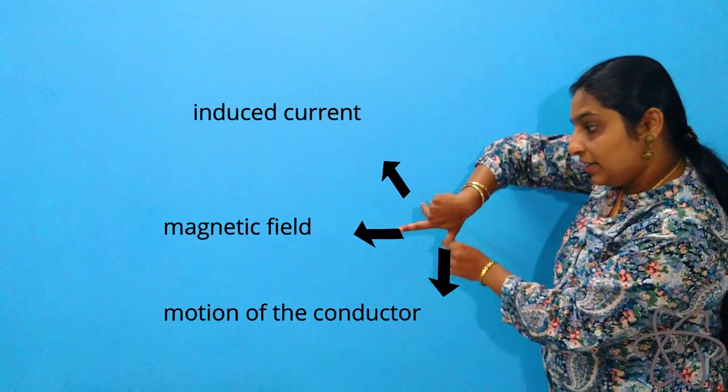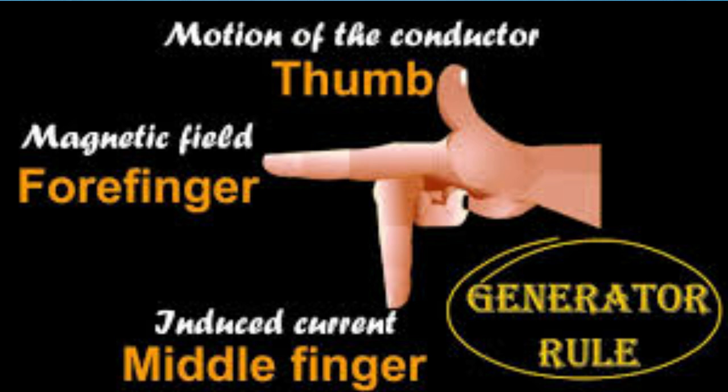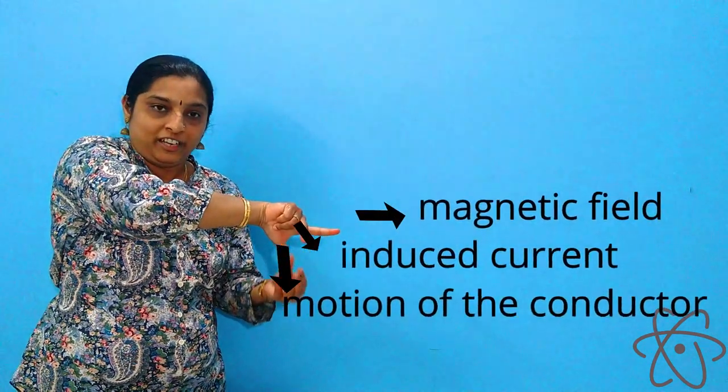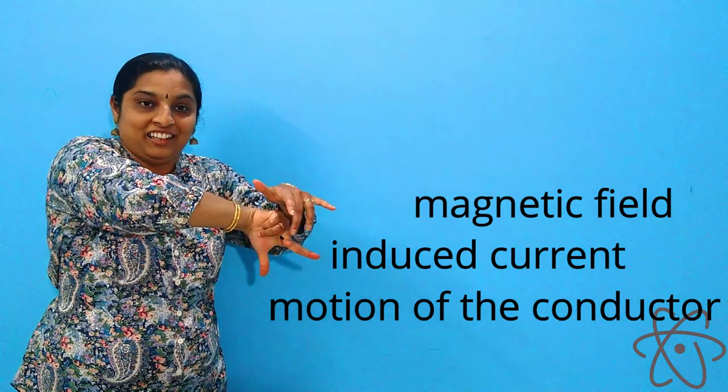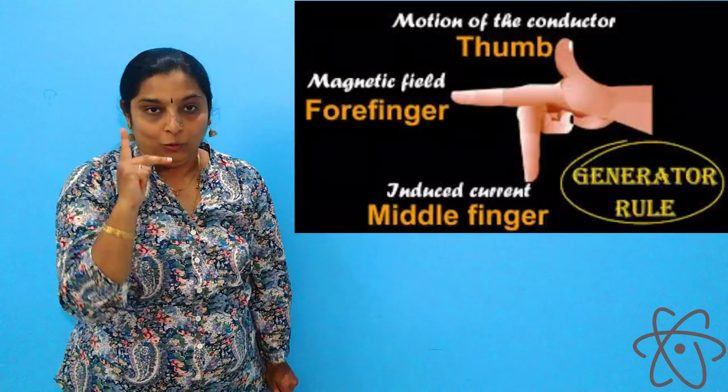So if the magnetic field is in this direction and the conductor is moving in this direction, then the current will be induced in this direction. If the motion of the conductor is in the opposite direction, then the current will be induced in the opposite direction. If the magnetic field is in this direction and the conductor moves in this direction, then the current induced will be in this direction. I hope you understood Fleming's right hand rule.